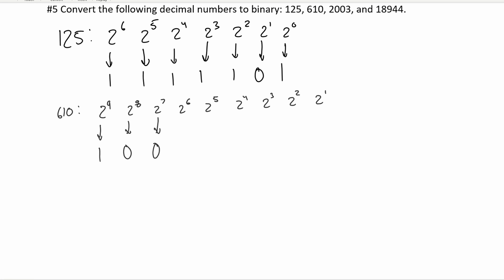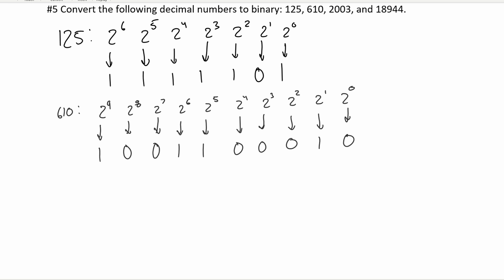If we subtract 2 to the 6th, we're going to be in our range — we get 34, so we'll have a 1. 2 to the 5th is in our range and brings our overall value to 2, so this is going to be 1. 2 to the 4th, 2 to the 3rd, and 2 to the 2nd each bring us out of our range, so those are all 0. 2 to the 1st is 2, which is in our range, so that's 1. There should also be a 2 to the 0th, but this is going to be 0 since we have exactly what we need. And that is the binary equivalent to 610.